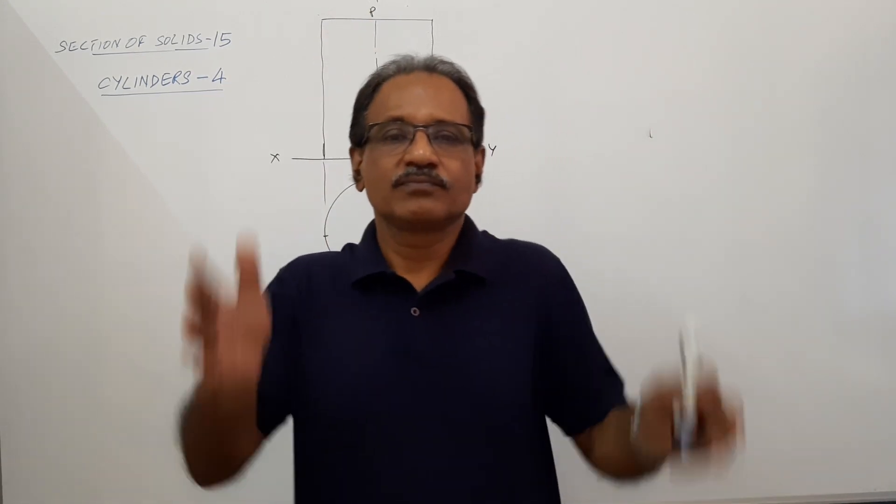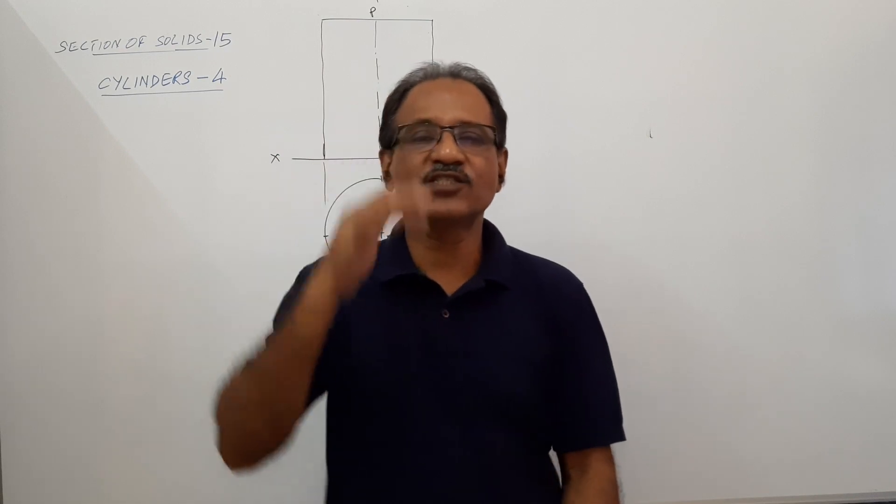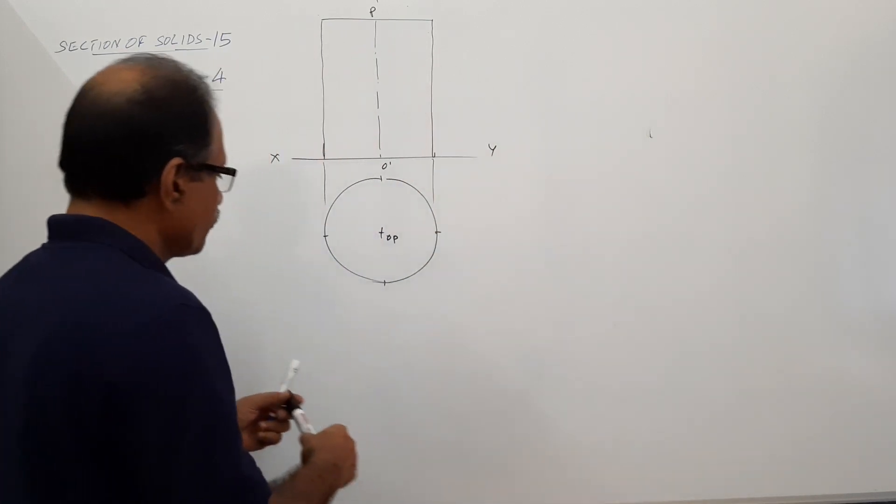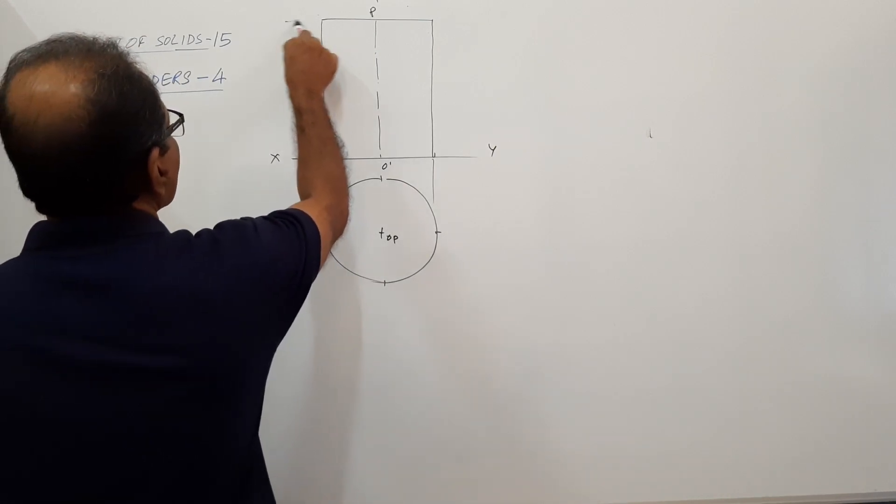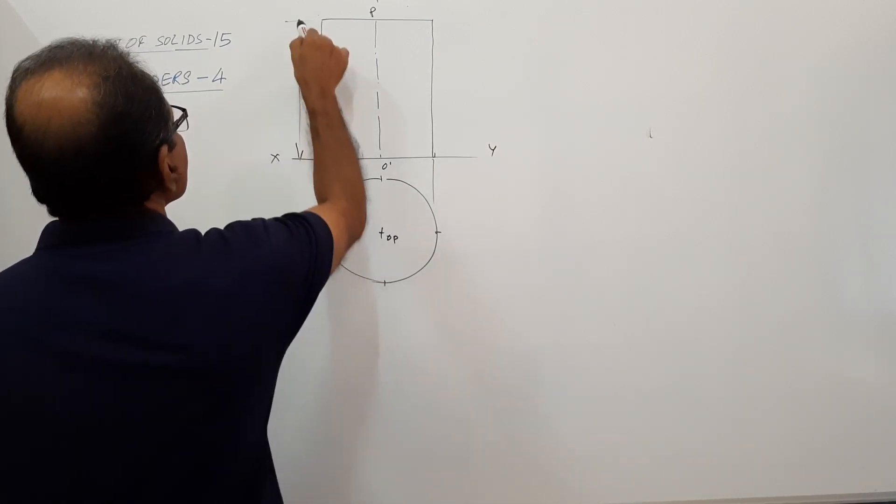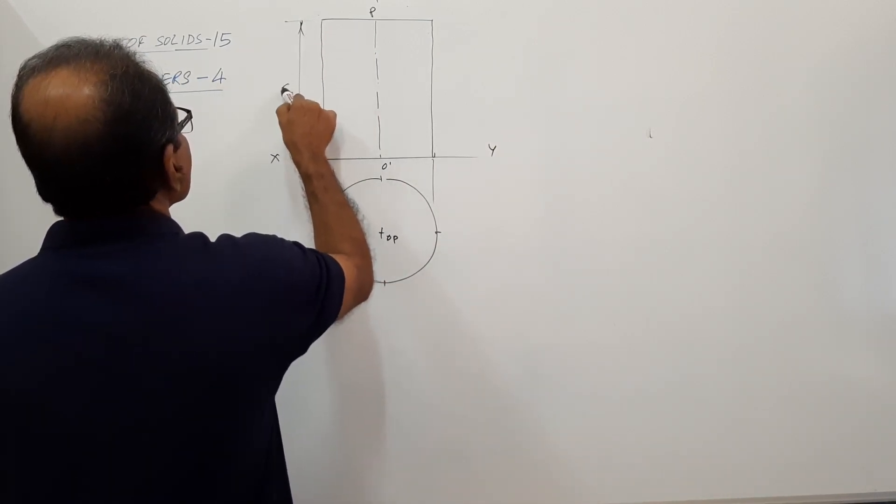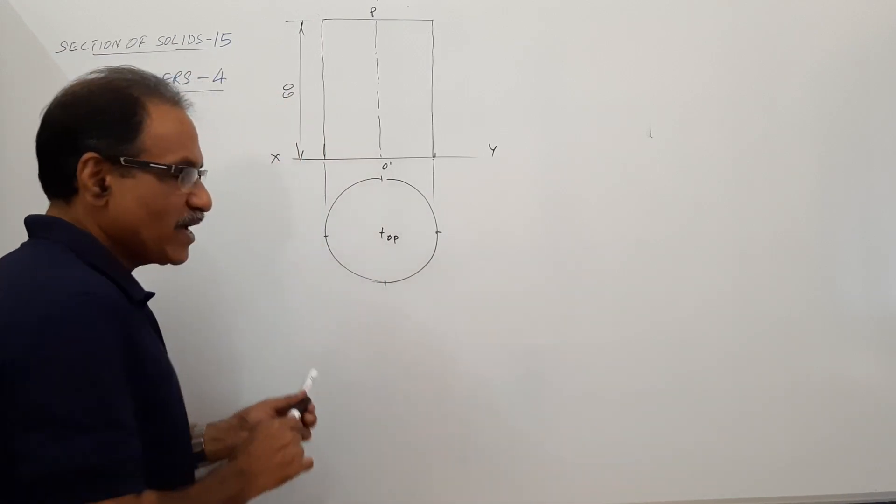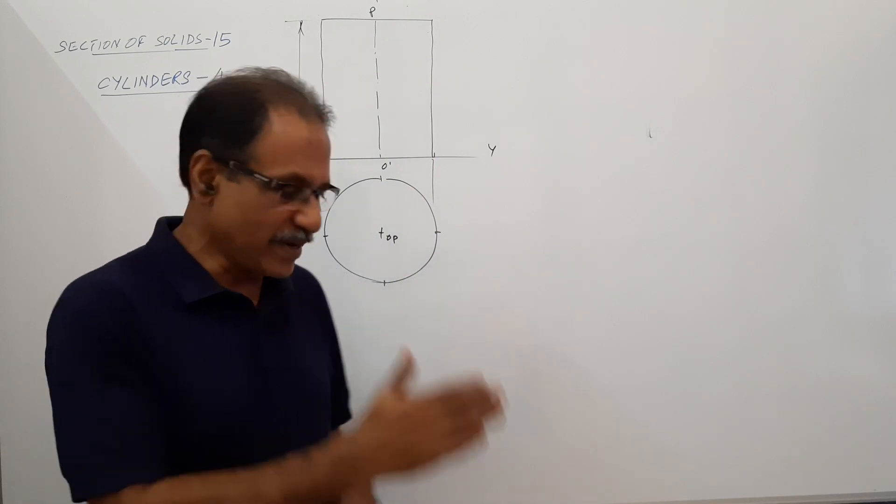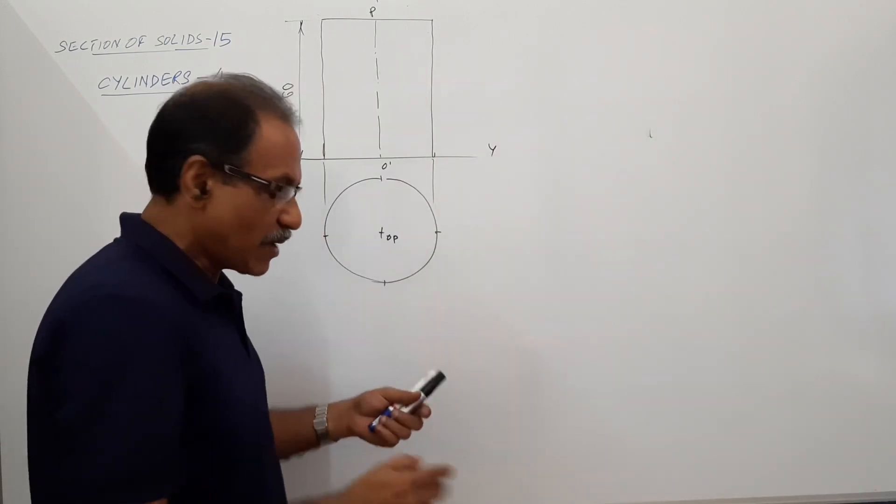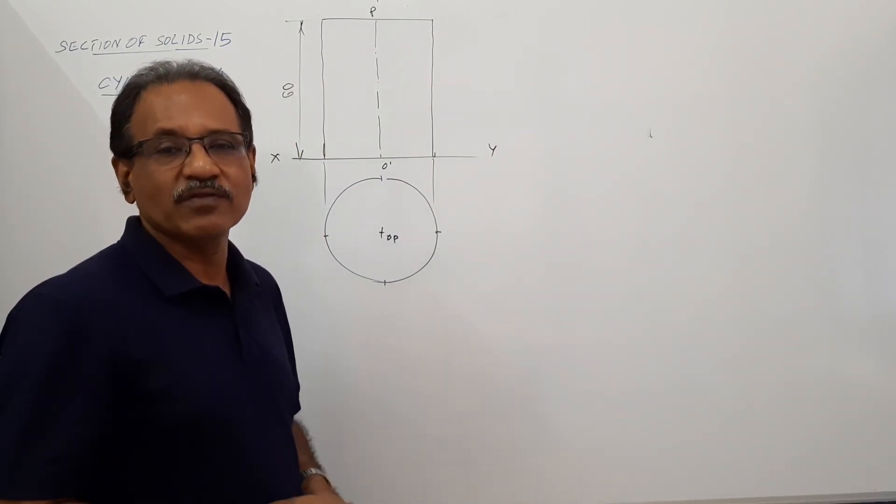A vertical cylinder, 50 mm diameter, 60 mm axis, standing on its base, is cut by a cutting plane parallel to VP, passing through 10 mm away from the vertical axis.